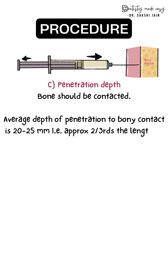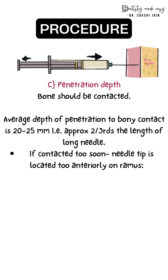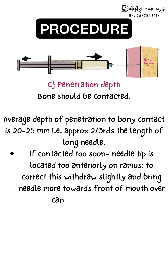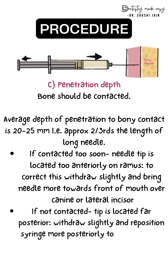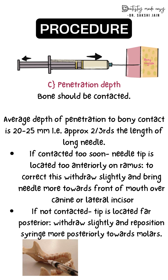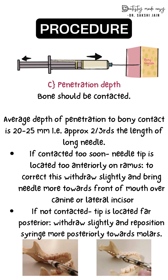The third parameter is the depth of penetration. After determining height and anterior-posterior distance, insert the needle until it contacts the bone — the mandible. The average depth in adults is 20 to 25 millimeters, approximately two-thirds to three-fourths of the needle length. Incorrect depth in any of these three parameters will result in an improper block.